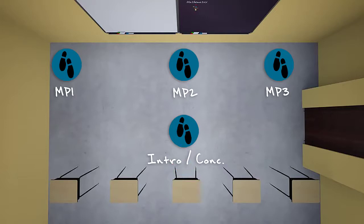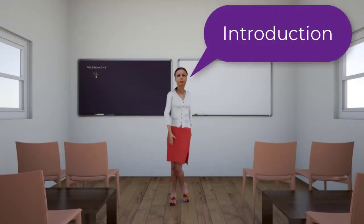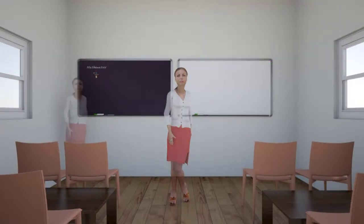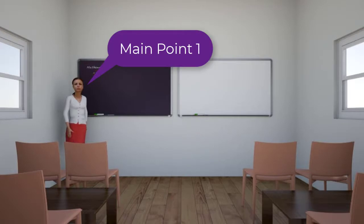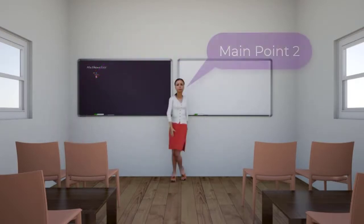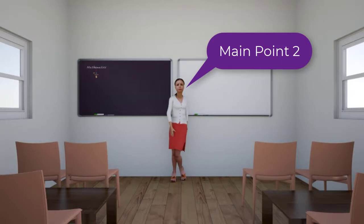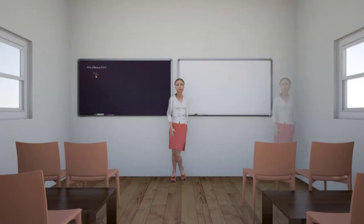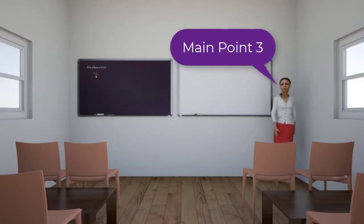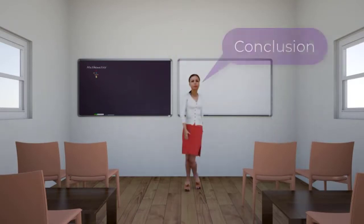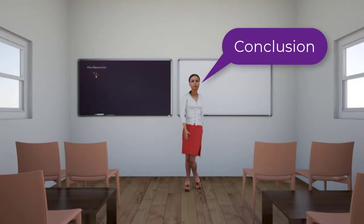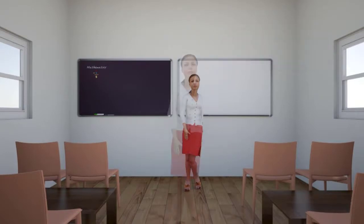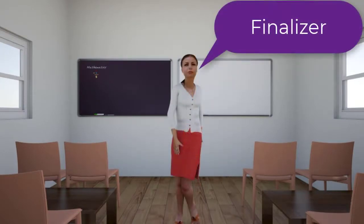Now that we've explored the theory, let's take a look at what it might look like in action. In this 3D rendering, you'll notice that the model starts in the center of the room for the introduction, then moves to the far side of the room for main point one, to the middle for main point two, and then over to the other far side of the room for main point three, and then moves back to the center to deliver the conclusion before finally taking a step forward to add emphasis to the finalizer.